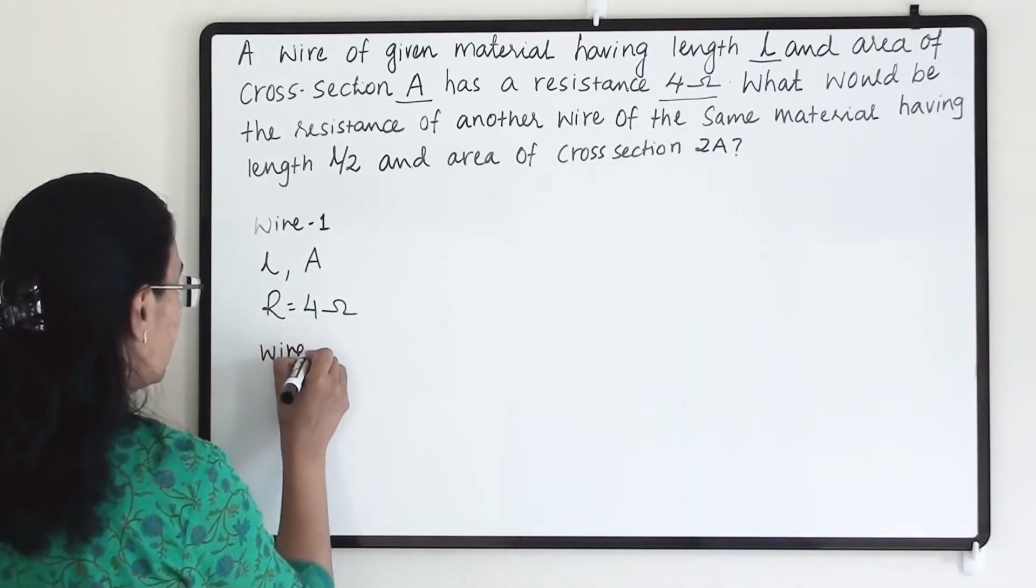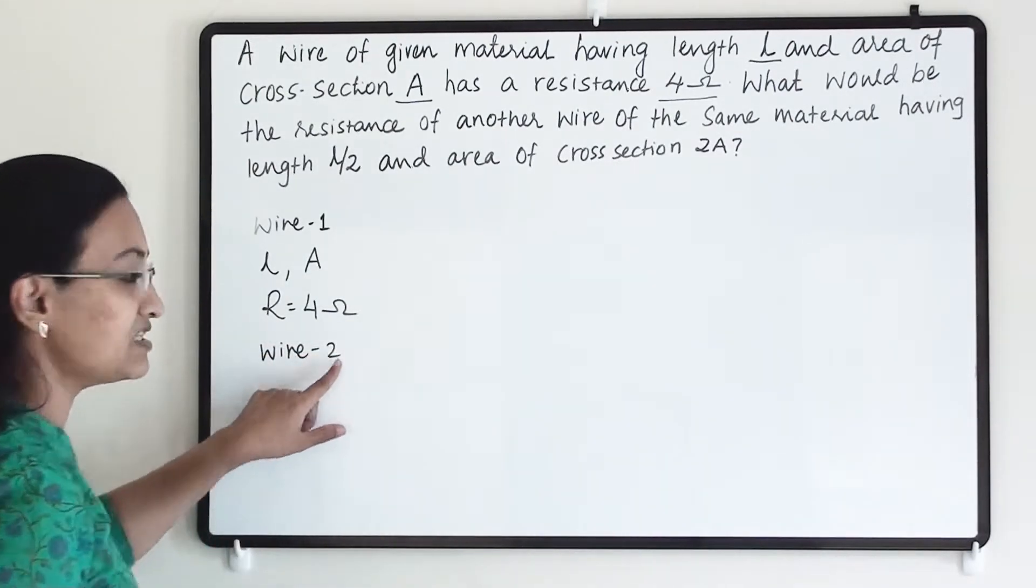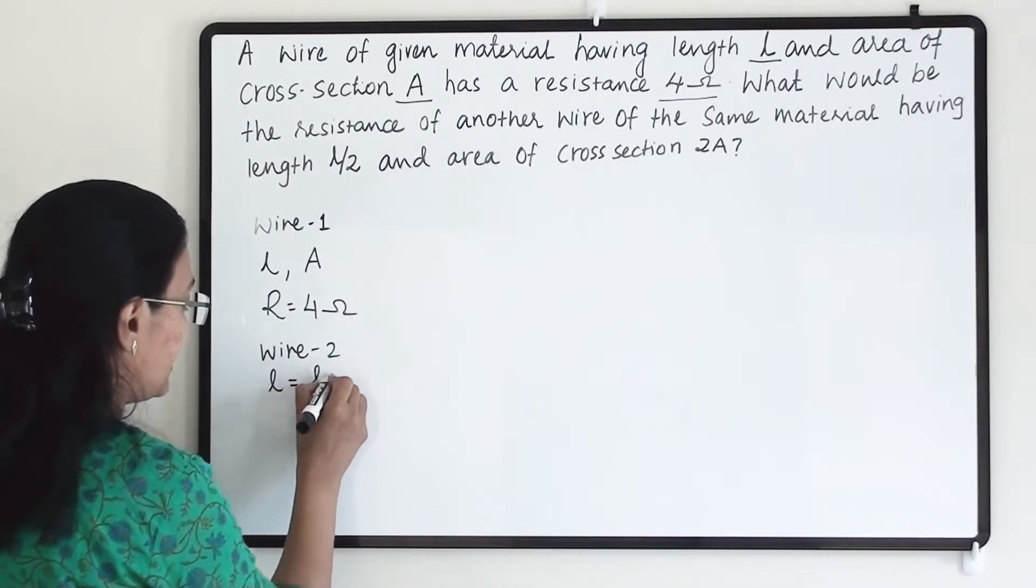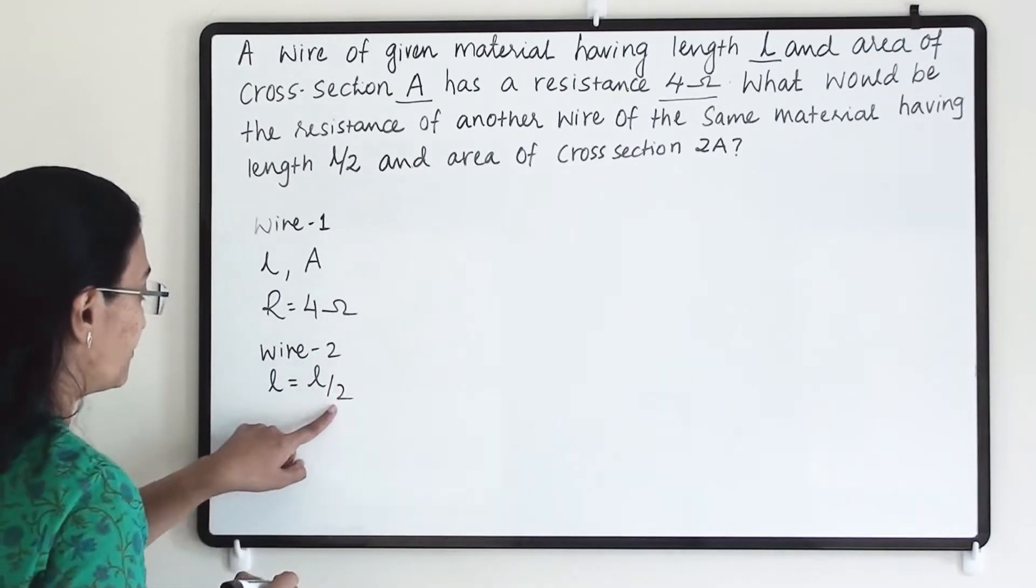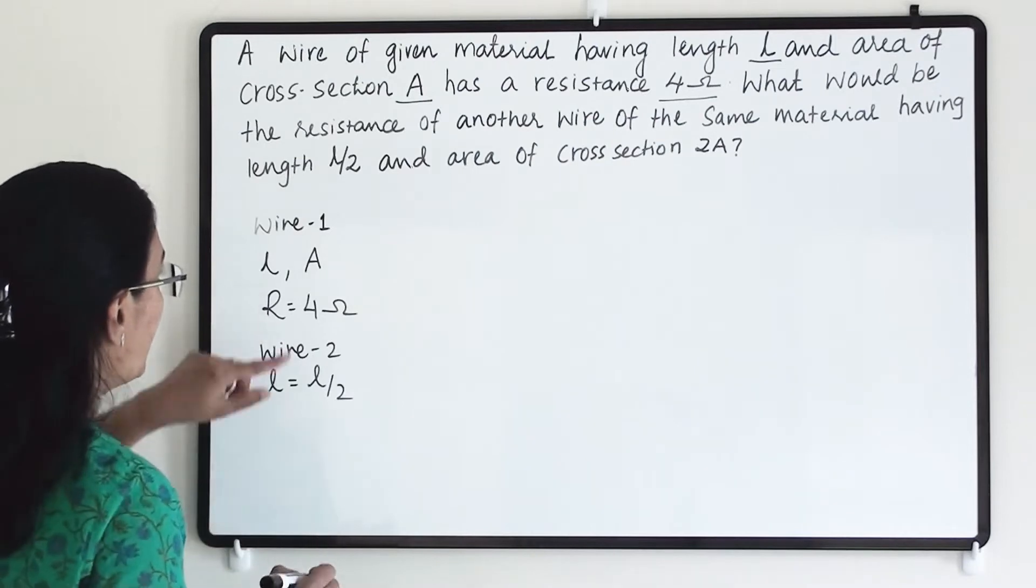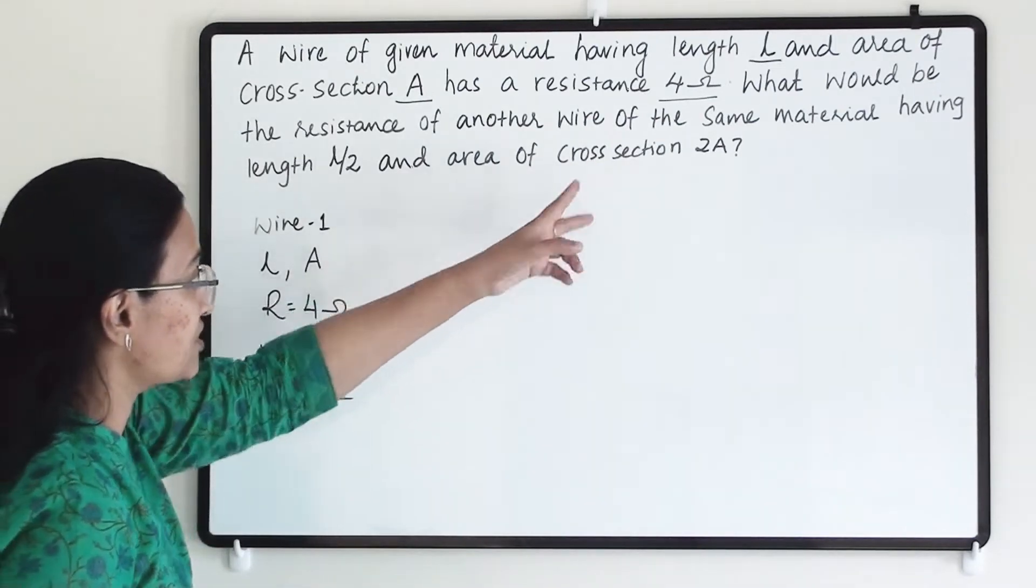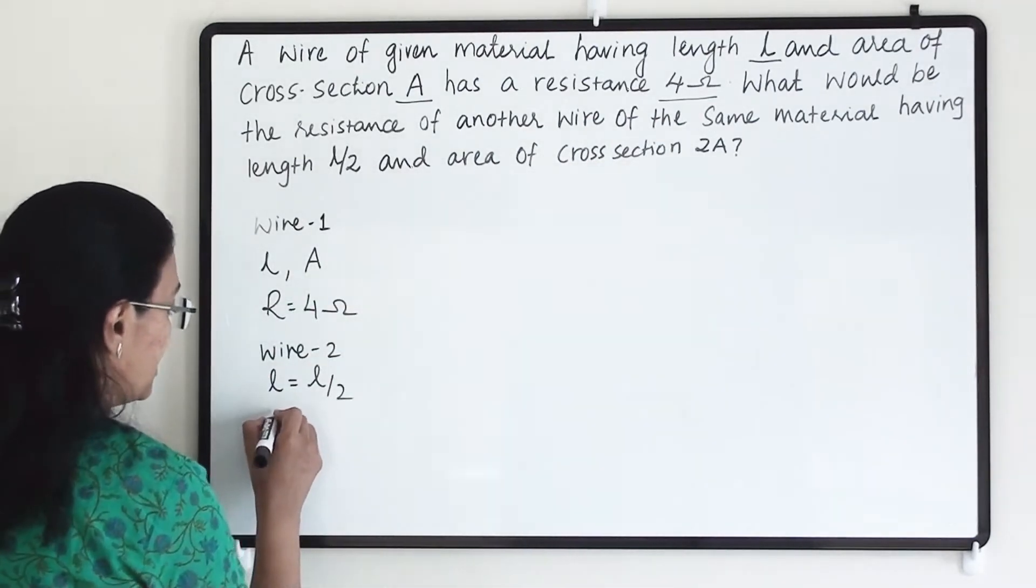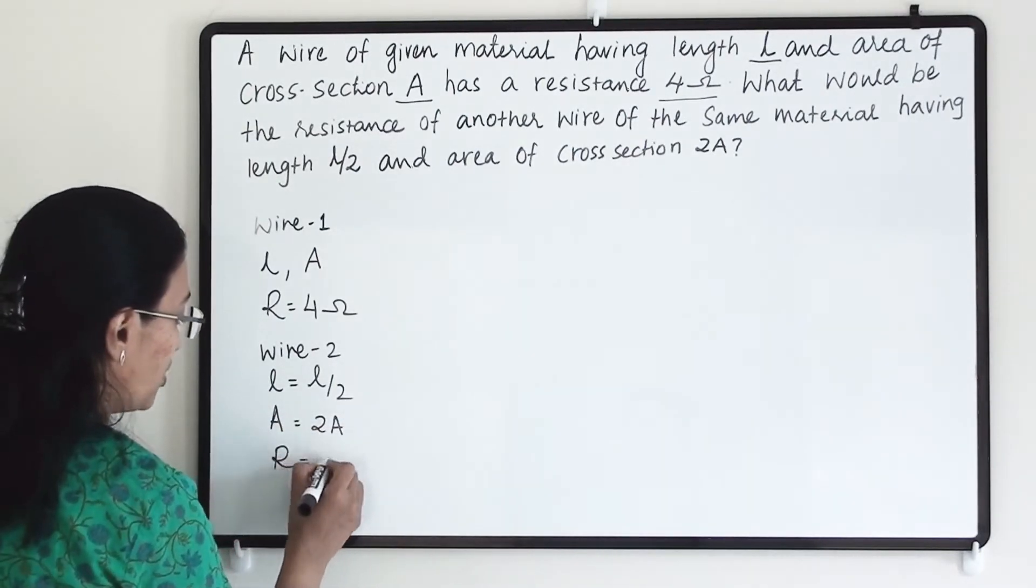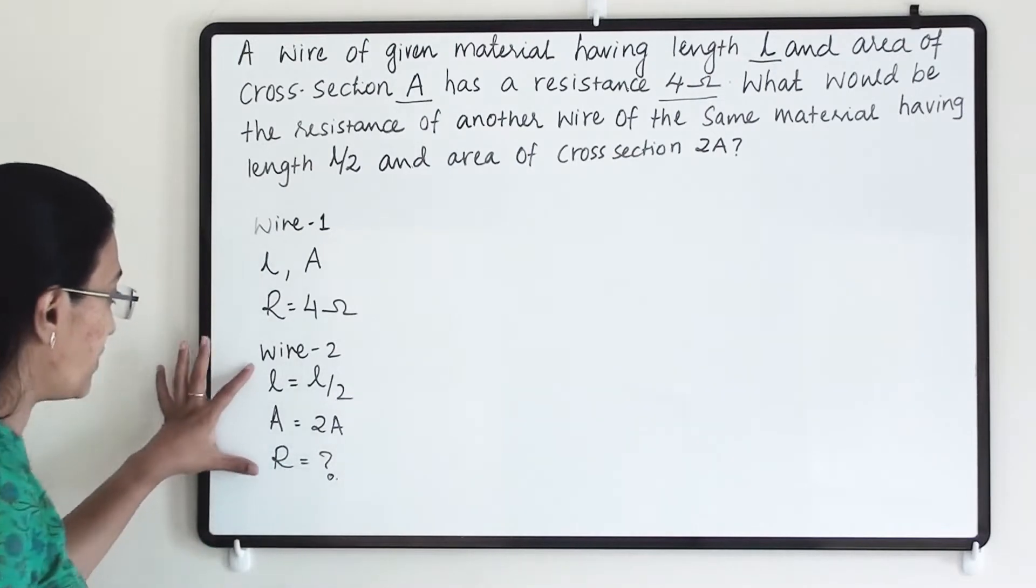When we are taking the same material's wire, we name it wire 2, in which length we are reducing to half - L equals L by 2. We are not taking the same length, we are reducing it to half and area of cross section we are doubling it. So area will be 2A and at that time we have to find out what will be the resistance for wire 2.